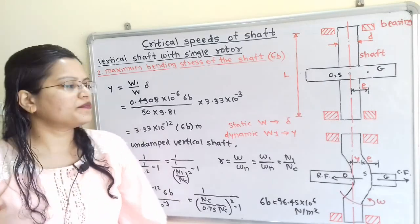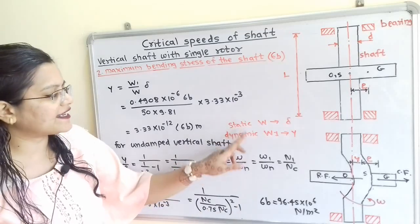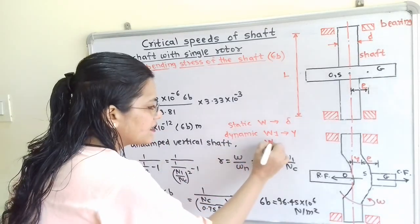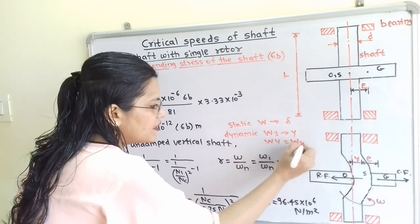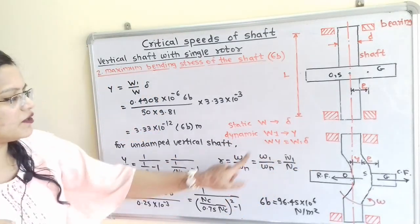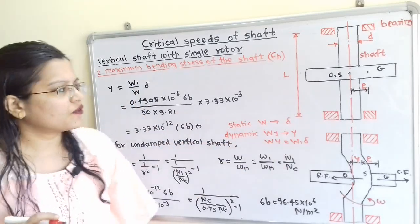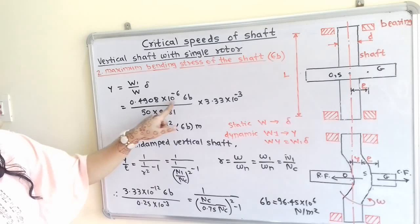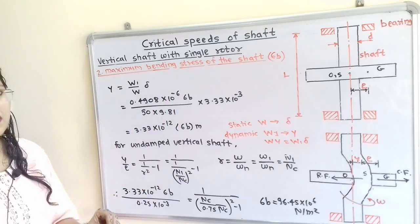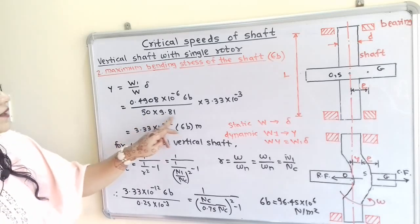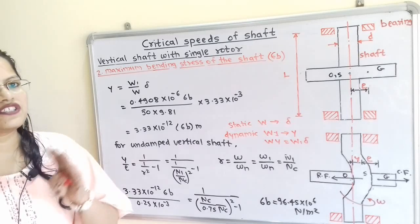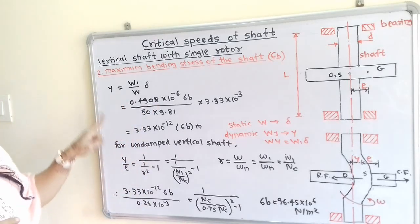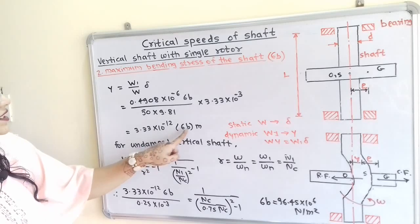Using the load-deflection relationship for static and dynamic conditions: W × Y = W1 × delta, so Y = (W1/W) × delta. Substituting W1 = 0.4908×10⁻⁶ × sigma_B, W = 50 × 9.81, and delta = 3.33×10⁻³, we get Y = 3.33 × 10⁻¹² × sigma_B meters.